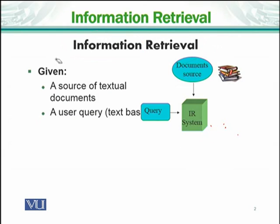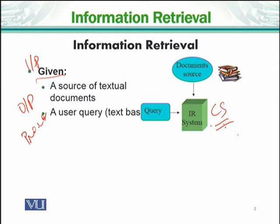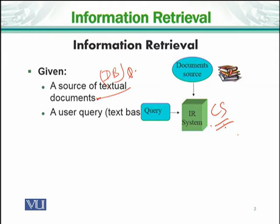What is given as input in information retrieval? As computer science students, we think in terms of input, output, and processing. The input is a source of textual documents. This means that if I search for 'Usman Ghani' on the internet, then Usman Ghani's information should be available — you have a database or dataset on the internet which contains relevant information about Usman Ghani.